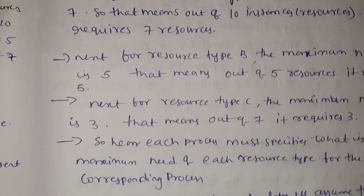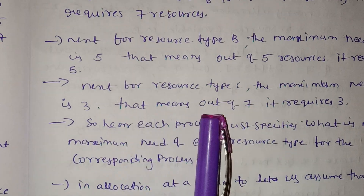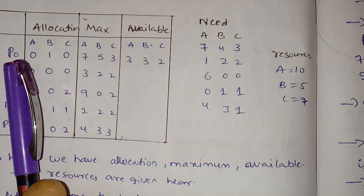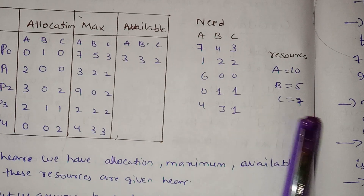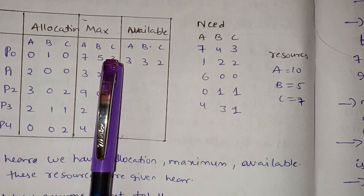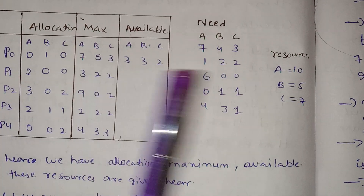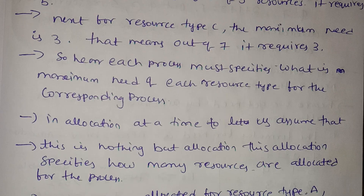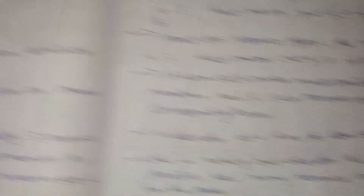For the second process P1, we will use a maximum of 7 RAMs for resource type C. What is the maximum need of each resource type for the corresponding process?